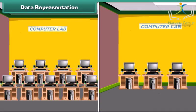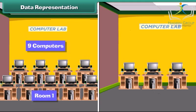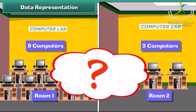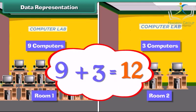This shows the arrangement of computers in your computer school. Look at the plan and then answer the questions that follow. How many computers are there in room one? There are nine computers in room one. How many computers are there in room two? There are three computers in room two. How many total computers are present in school? There are total 12 computers in the school.